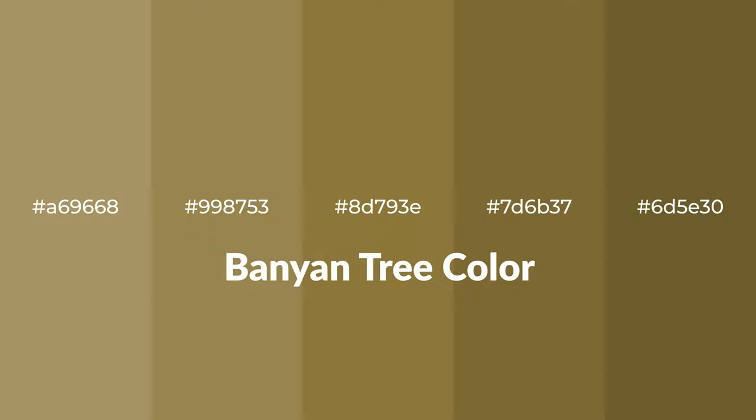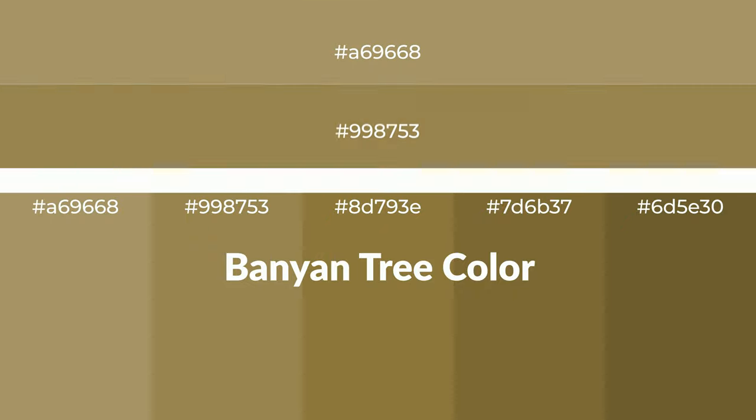Warm shades of banyan tree color with green hue for your next project. To generate tints of a color, we add white to the color. Tints create light and exquisite emotions. To generate shades of a color, we add black to the color, and it is used in patterns, 3D effects, and layers. Shades create depth and drama.